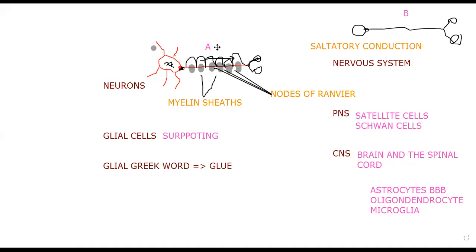The student answered: the myelinated nerve conducts impulses faster because the action potential jumps along the myelin sheaths. In a myelinated nerve the action potential jumps quickly, whereas in an unmyelinated nerve the action potential moves straight along the entire axon, making it slower.